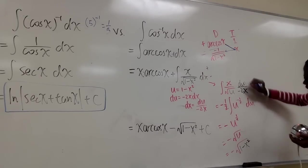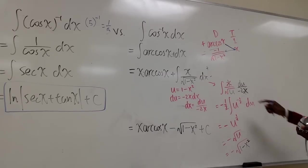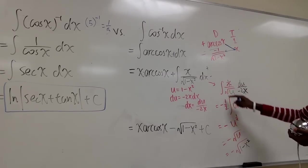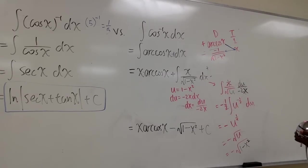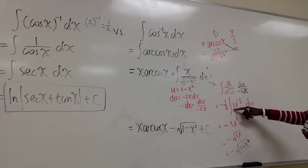This x cancels out with this x. And we just have a negative half outside, times the integral of 1 over radical u. And 1 over radical u in power form is u to the negative half.